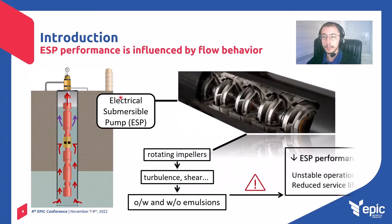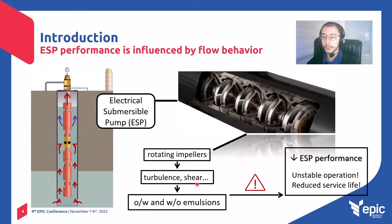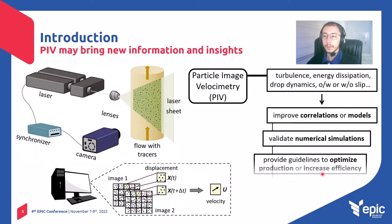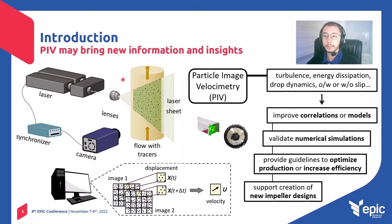The main motivation for this study is the electrical submersible pump, or ESP, which is used as an artificial lift method in the oil and gas industry. The ESP is composed of rotating impellers in which turbulence and shear are very intense. In the presence of oil and water, emulsions are formed inside the pump, and they lead the pump to operate with lower performance and also in an unstable way. In this context, we use flow visualization methods such as PIV to bring new information and insights about the flow inside the pump.